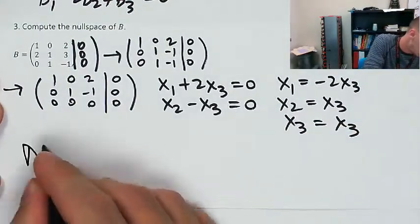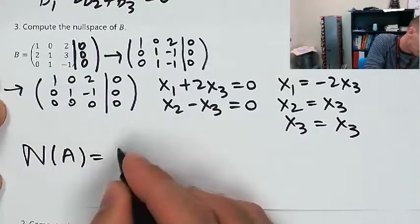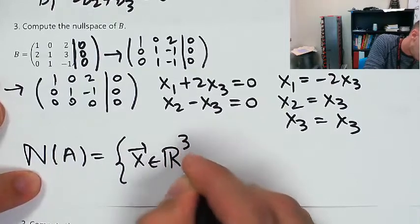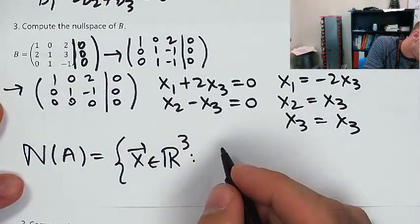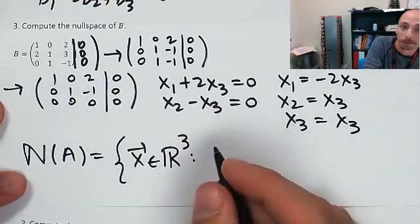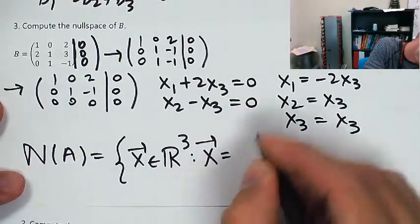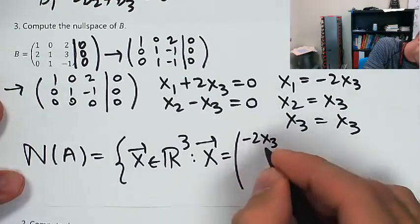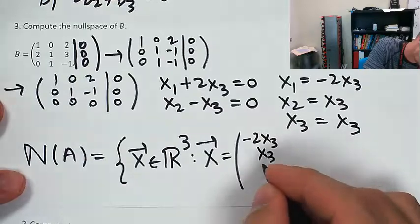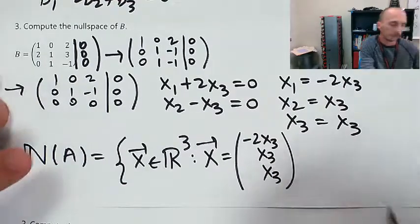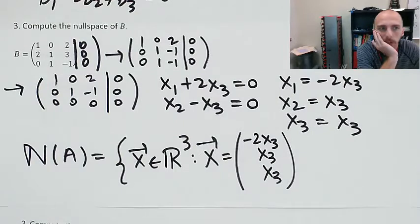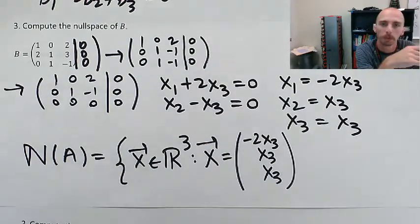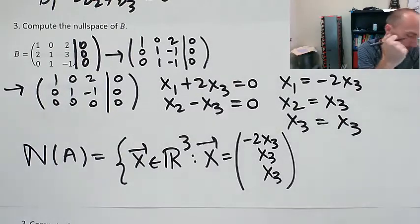The null space of A is the set of all three-dimensional vectors x for which x equals the vector (negative 2x3, x3, x3). If you wanted to factor out x3 and say it's all scalar multiples of the vector (-2, 1, 1), you're welcome to do that, but this is a perfectly safe place to stop.